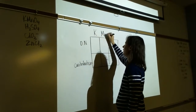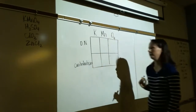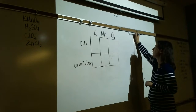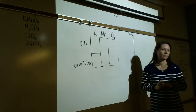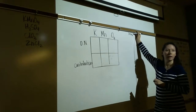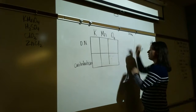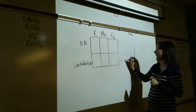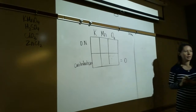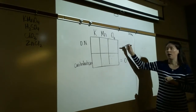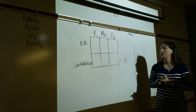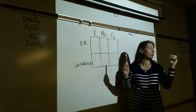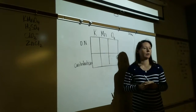Oxygen in a compound — not hydrogen peroxide — is always -2. There are four oxygens, so the contribution is -8. All contributions must add up to zero, so manganese's contribution must be +7. Since there's only one manganese, its contribution equals its oxidation number: +7. So the oxidation numbers are K=+1, Mn=+7, O=-2. The bottom row is just bookkeeping — the top row is your actual answers.